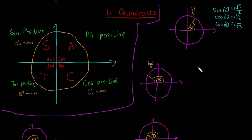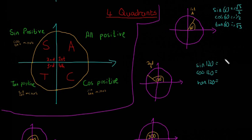Now in the second quadrant, we're going to do the same. Sine of 120, cos of 120, and tan of 120. If this is true, then only the sine answer will be positive, and cos and tan will be negative. We find that sine is root 3 over 2, cos is minus a half, and tan is minus root 3. So that's positive and they're both negative. First quadrant all are positive, second quadrant S is positive.